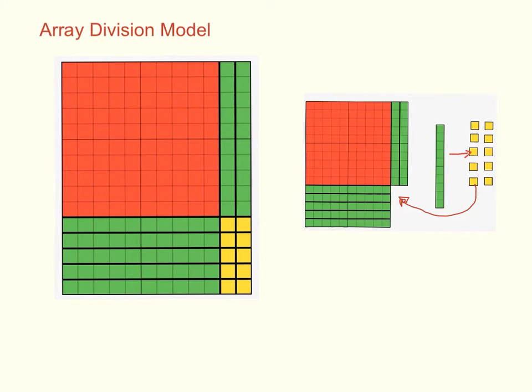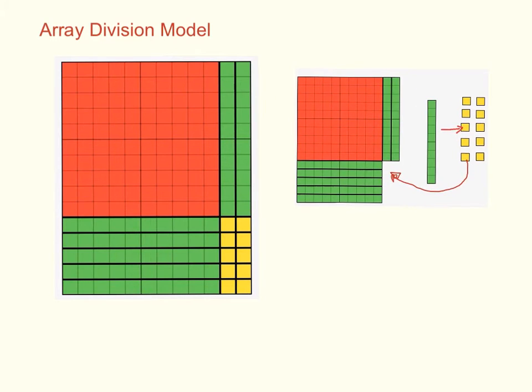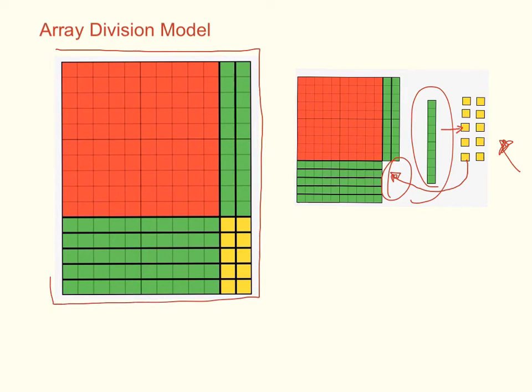Notice that I traded in my 10 over here for these ones right there and I moved them all over into this empty area right here so that I could make a perfect, notice I have a perfect rectangle. Now, let's just double check that this indeed is 180, that I didn't add or subtract anything.